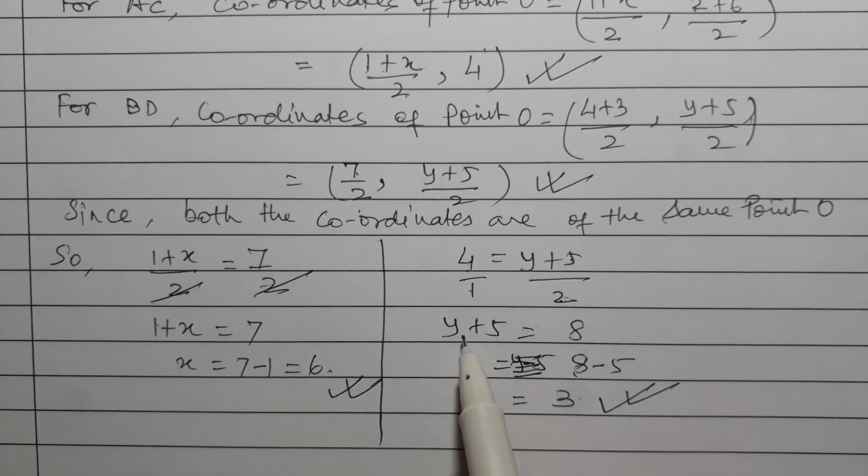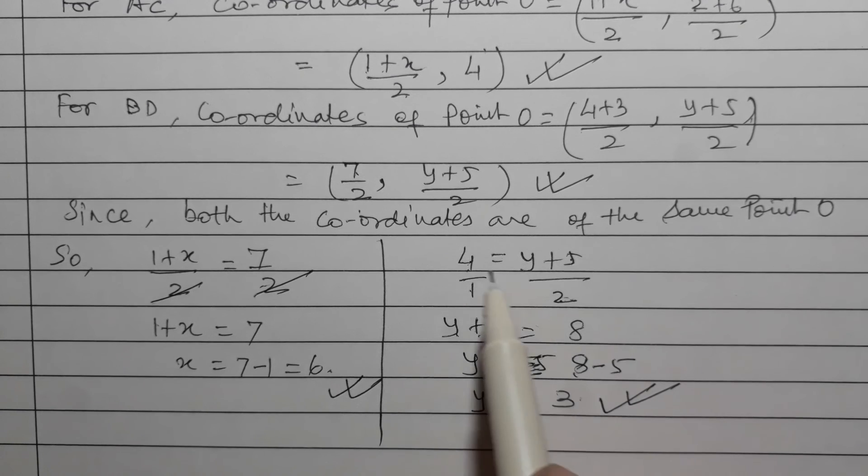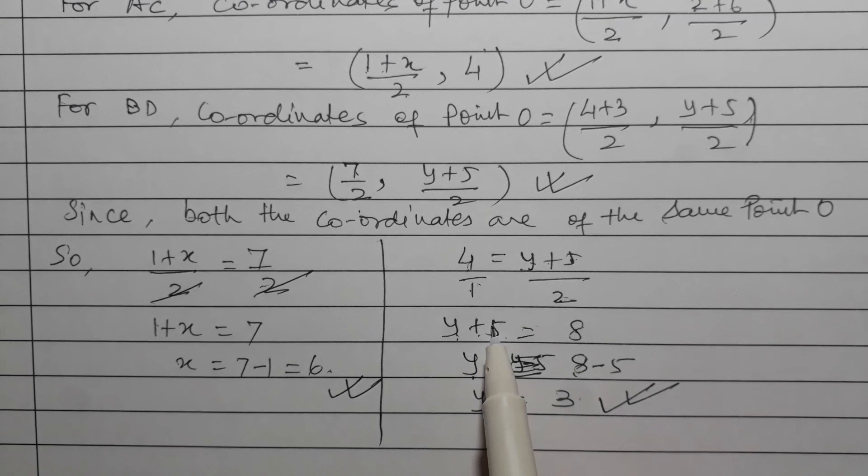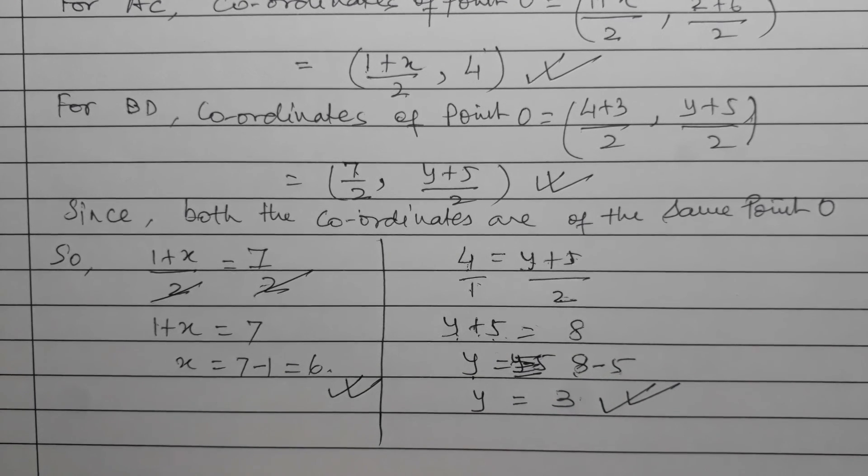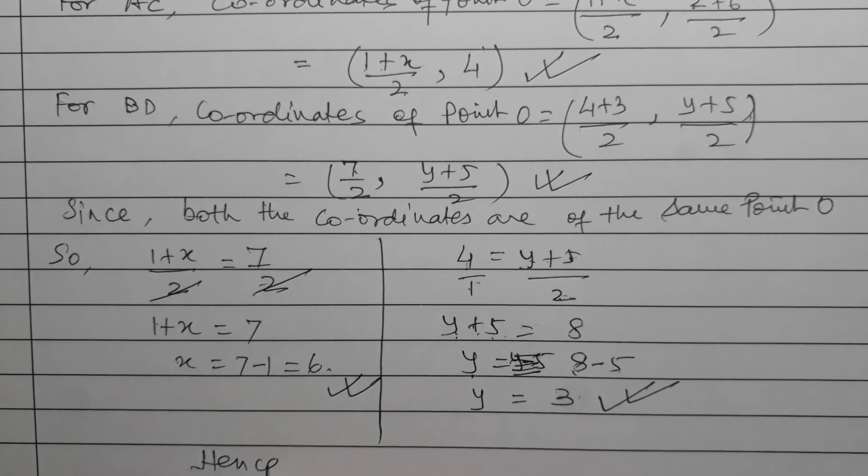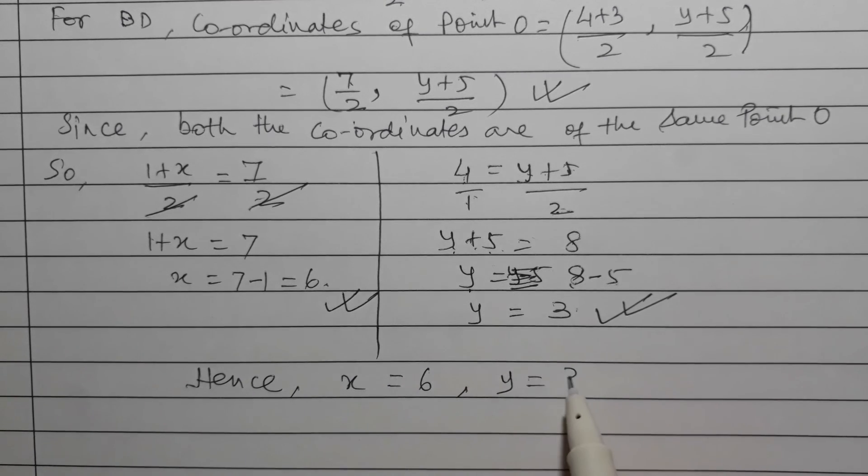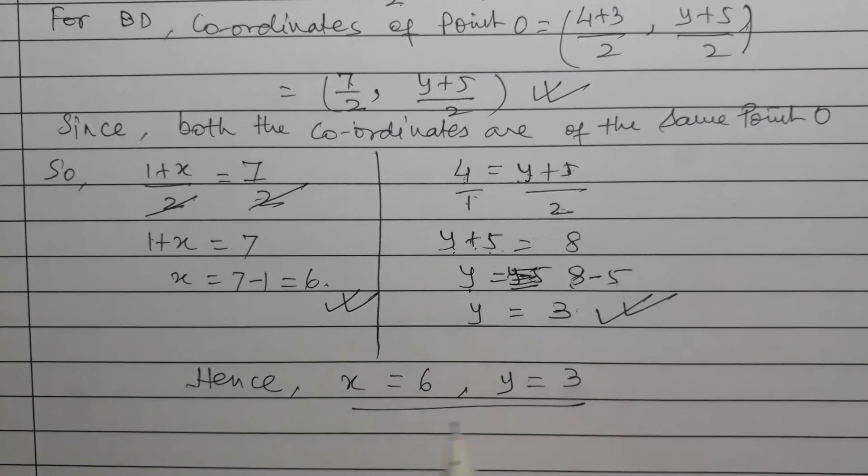So y+5 = 8, therefore y = 8-5 = 3, and x = 6. Hence x = 6 and y = 3. This is the answer.